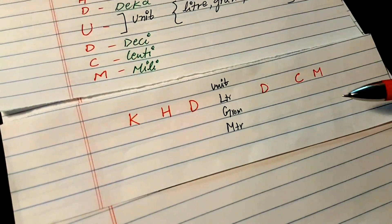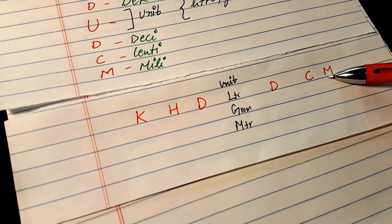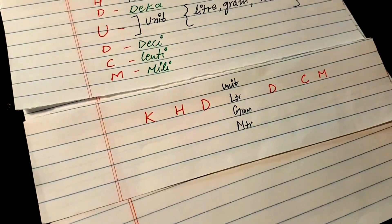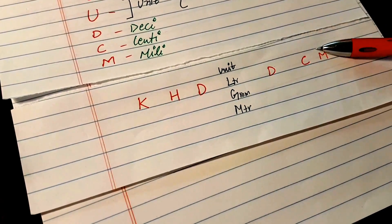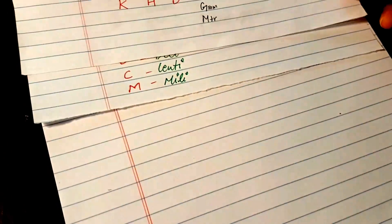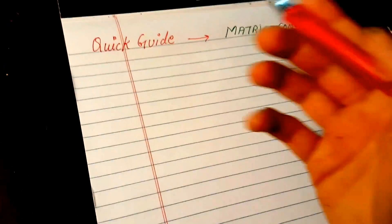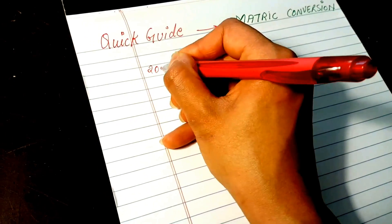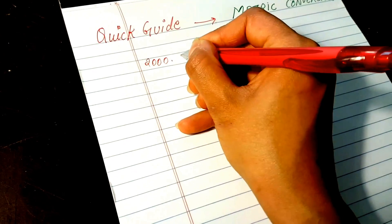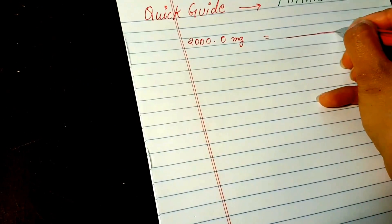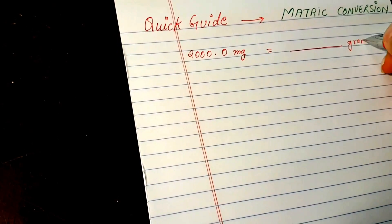For example, you want to go from milligrams to kilograms. Suppose your question says: convert 2000 milligrams to grams.